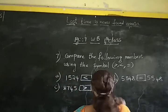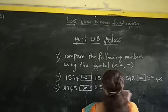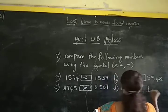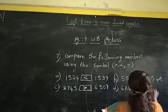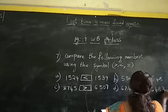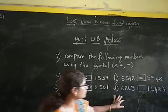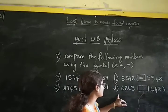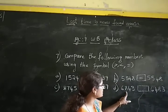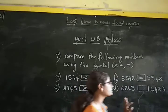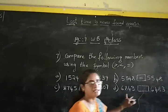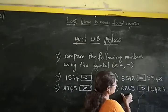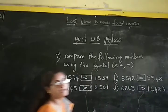Next sum: 6,843 and 6,483. Both numbers have the same number of digits. In thousands place both have 6. In hundreds place, this number has 8 and this number has 4. Since 8 is bigger than 4, we place the symbol greater than because the first number is bigger than the second number.